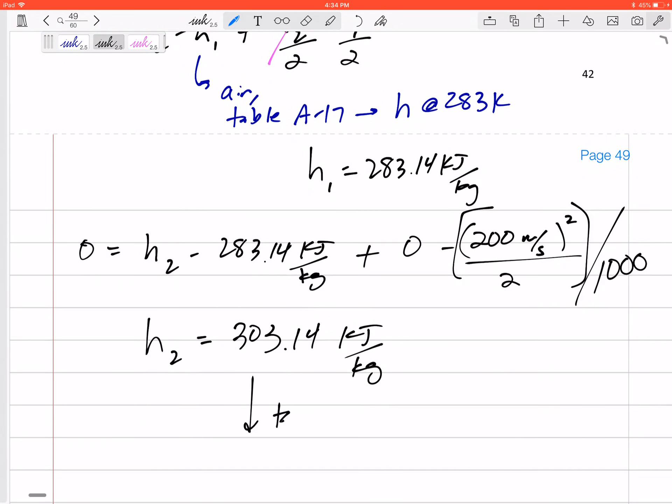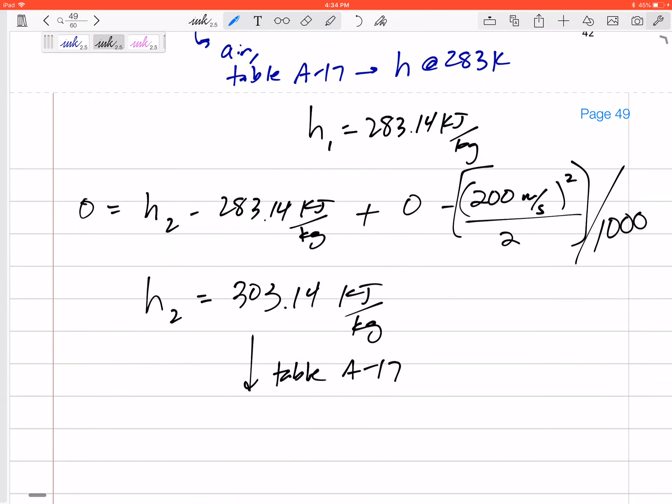And so again, table A-17 for air has h values at different temperatures. I could interpolate that 303.14 lies somewhere between 300.19 and 305.22. Interpolate that to get—see if you can do that—I've got a temperature of 303 Kelvin. I'll probably leave it there. You could change that to Celsius, but that would be your final temperature.